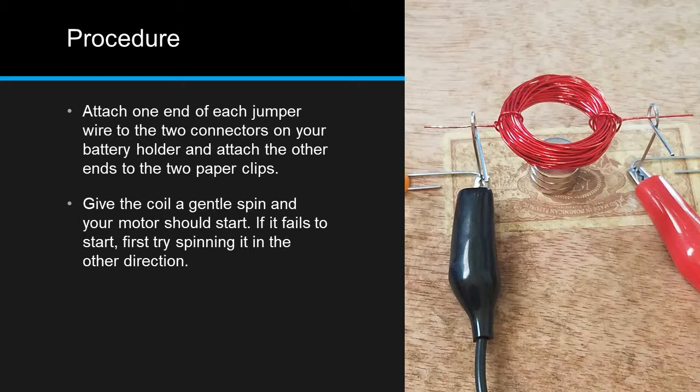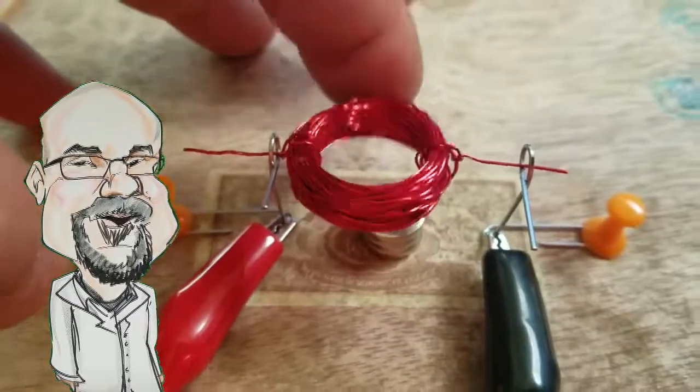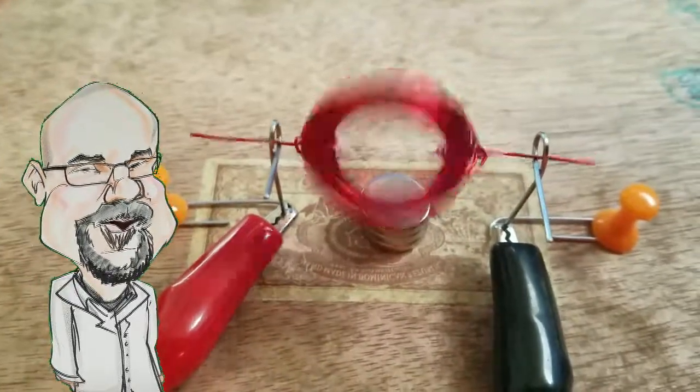If it fails to start, first try spinning it in the other direction. Next, you would check that the insulation is completely scraped off on the top half of each of the wires, and finally check your batteries. If everything checks out, this is what should happen.